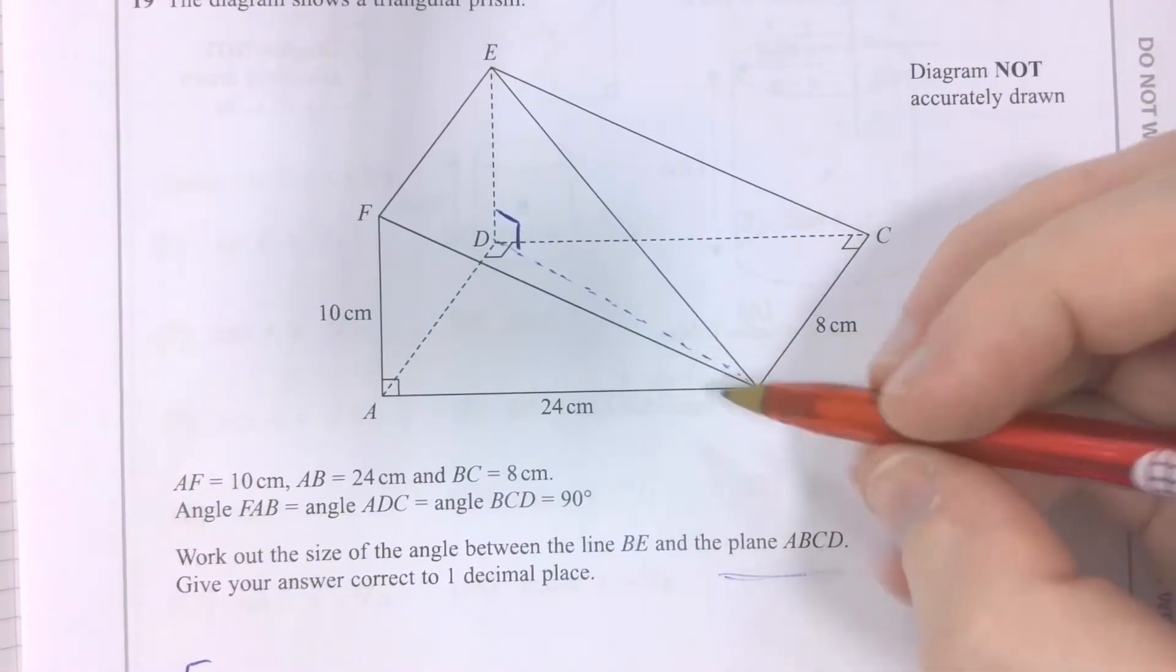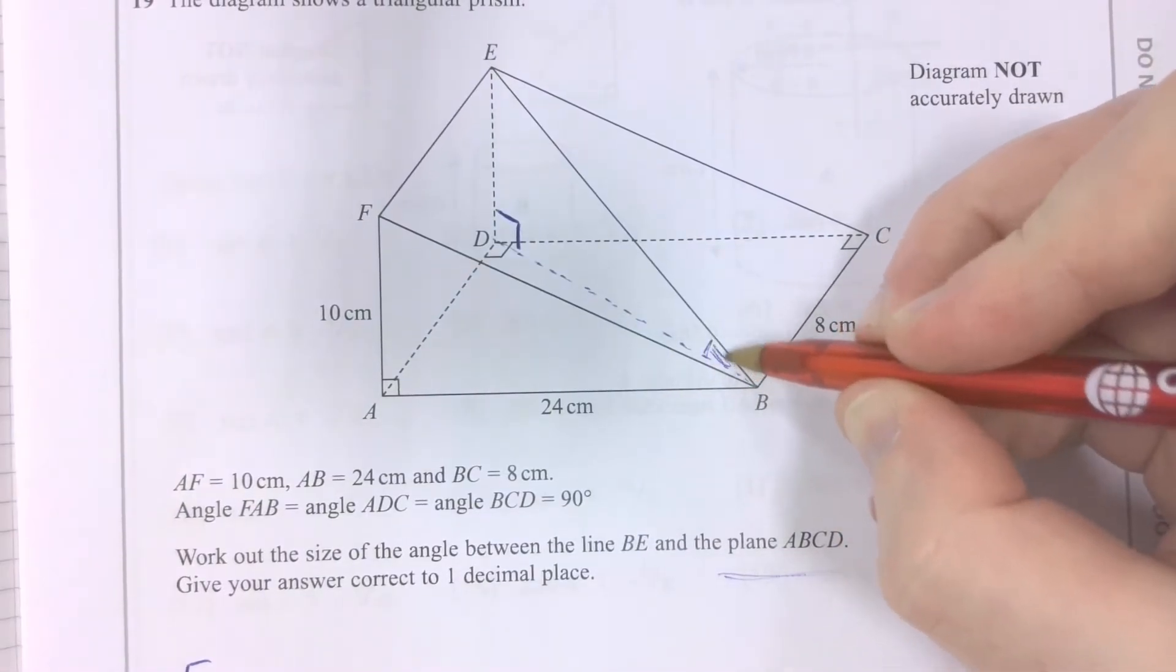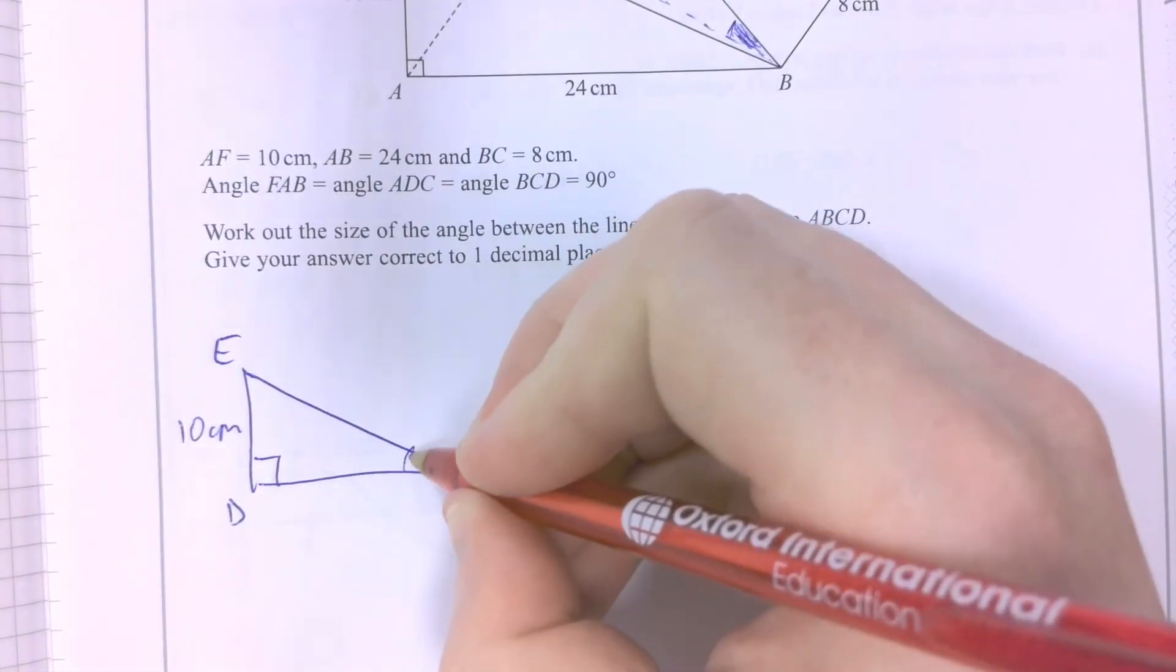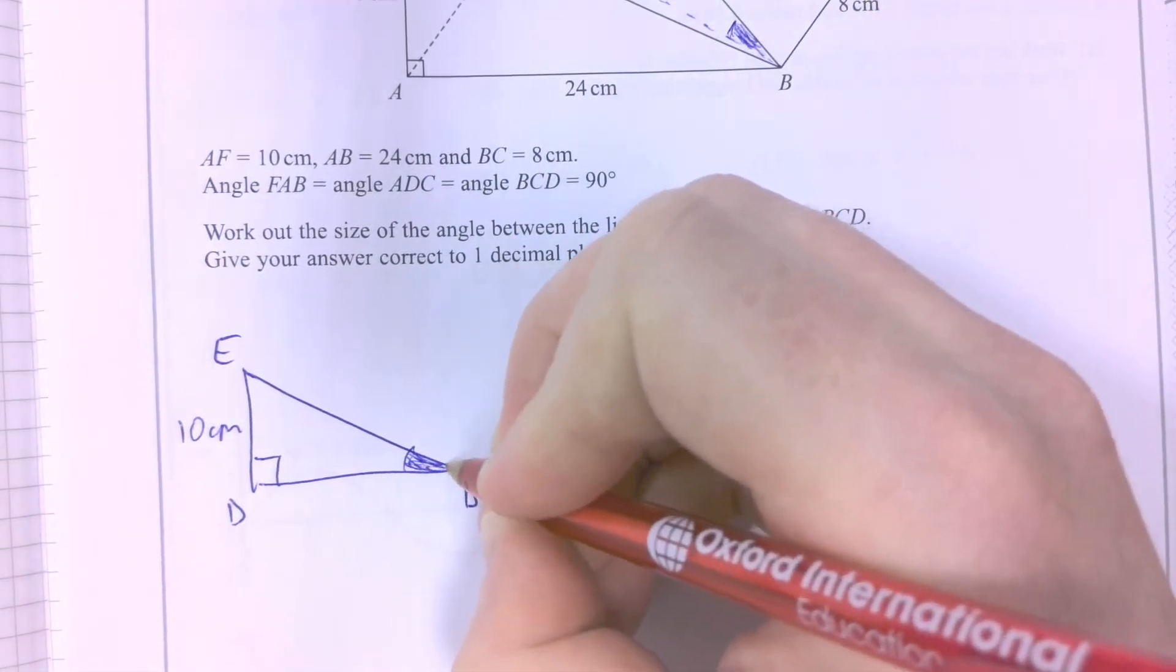And this angle here is what we're looking for. This little angle here, which is the same as this little angle here. So that's what we're looking for.